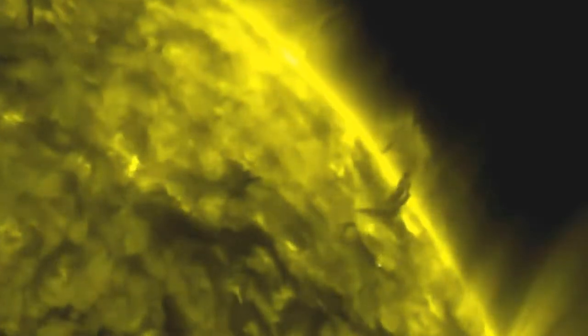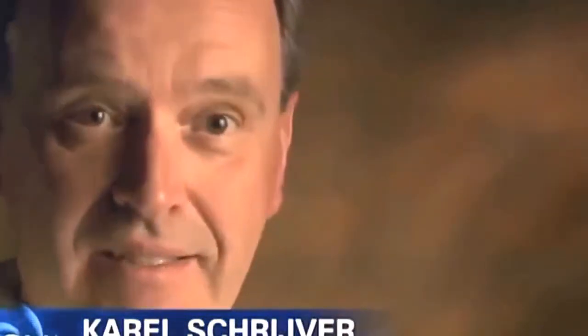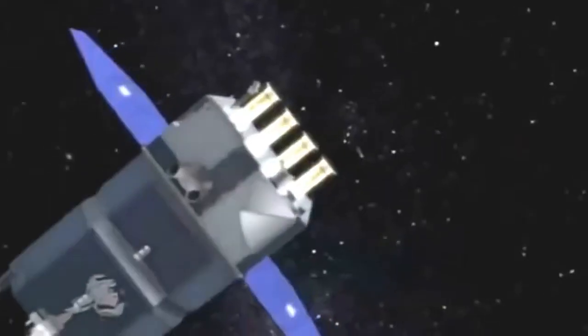The new images reveal the sun like never before. An alien landscape where strange structures ebb and flow. Giant tornadoes, hundreds of thousands of miles high, that could easily engulf the Earth. And super-heated bubbles of plasma the size of Alaska. When I look at the pictures, I think they're really beautiful. I'm struck by the dynamics of it. Things are changing all the time, no matter where you look. And I'm also pretty daunted by the complexity of it all. That's not surprising.